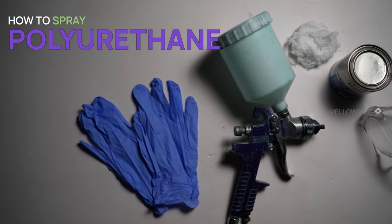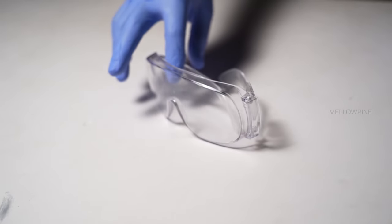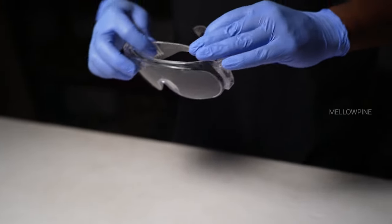In this video, I'll show the step-by-step process of spraying polyurethane. Before starting, ensure you're wearing safety goggles to protect your eyes and a respirator mask to shield yourself from volatile organic compounds.